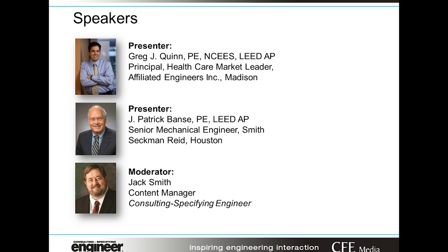Pat, your first question: what differential pressure sensors are most accurate and reliable to ensure that room pressurization is correctly monitored? That's an excellent and frequent question. Sensors measuring between a corridor and an isolation patient room or an operating room need to be positioned correctly and need sufficient sensitivity — reading to at least a hundredth or a thousandth of an inch of water column. More than anything, it's placement and the controls of the air systems that will make those measurements work best.